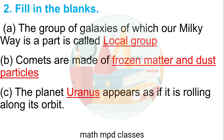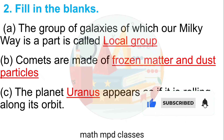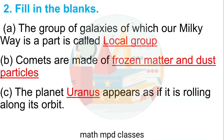Question No. 2. Fill in the blanks. A. The group of galaxies of which our Milky Way is a part is called — Answer: Local Group. B. Comets are made of — Answer: Frozen matter and dust particles.